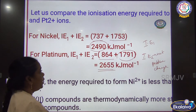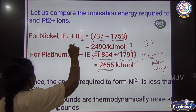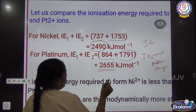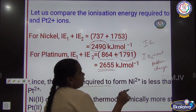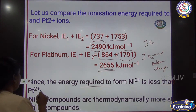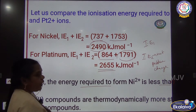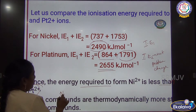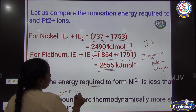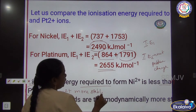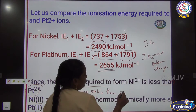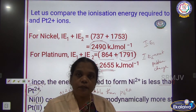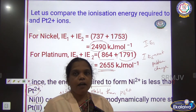Comparing the ionization energy of nickel and platinum: nickel requires less ionization energy than platinum 2+. Therefore, when comparing thermodynamic stability, the Ni2+ ion is more stable than Pt2+ because platinum requires more energy. Based on ionization enthalpy, thermodynamic stability is also assigned.